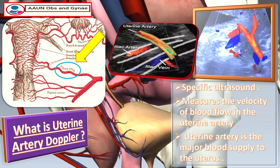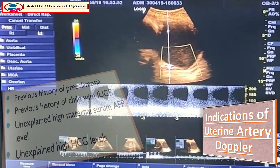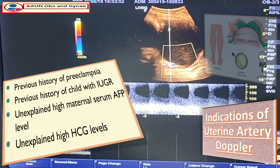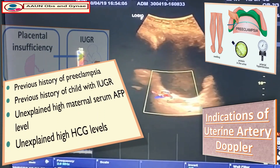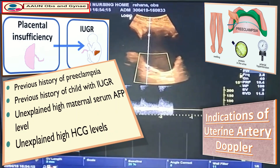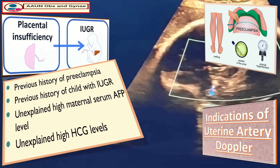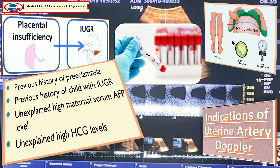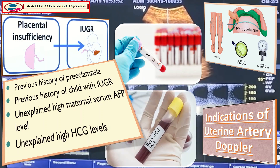The indications of uterine artery Doppler include: first, previous history of pre-eclampsia; second, previous history of a child with intrauterine growth retardation; third, unexplained high maternal serum alpha-fetoprotein level; and fourth, unexplained high hCG levels.